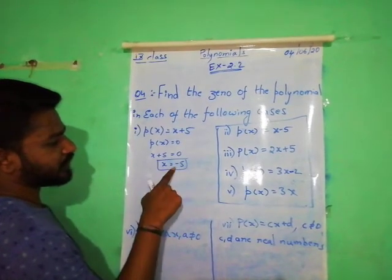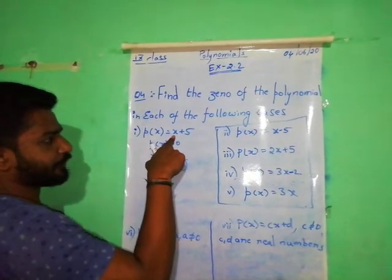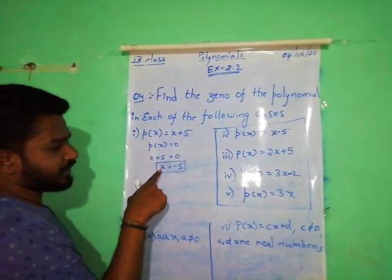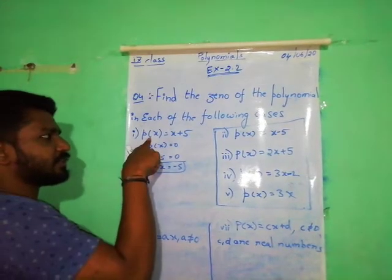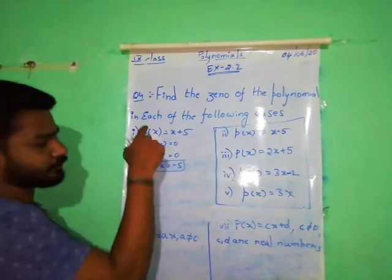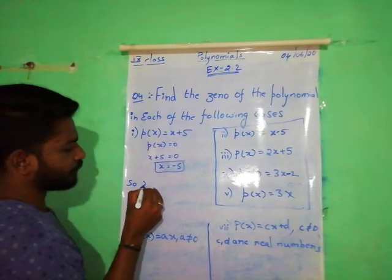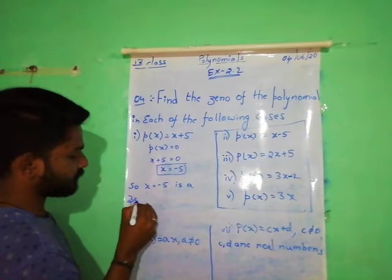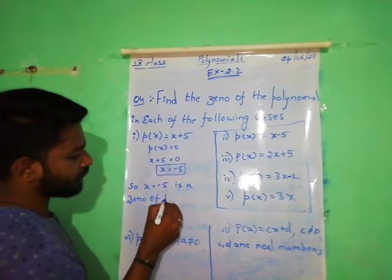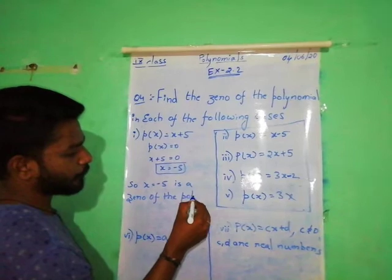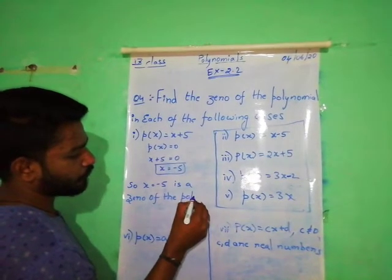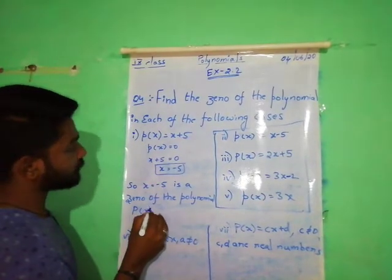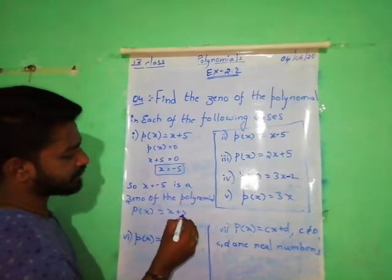If we substitute x is equal to minus 5: minus 5 plus 5 becomes 0. So x is equal to minus 5 is a zero of the polynomial P of x is equal to x plus 5.